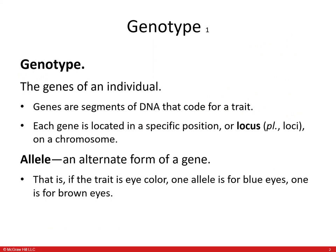Genotype is the genes of the individual. Genes are segments of DNA that code for a particular trait or a protein. Each gene is located in a specific position, also known as locus or loci, on a chromosome. Alleles are alternative versions of the same gene.